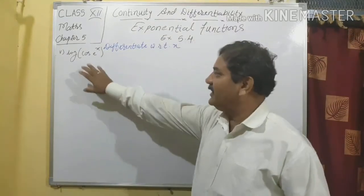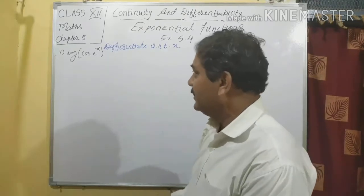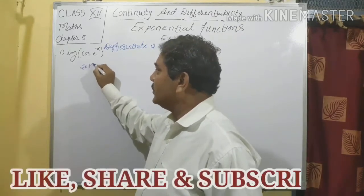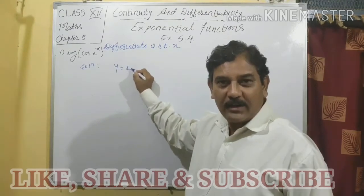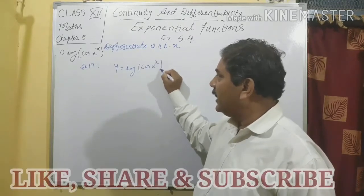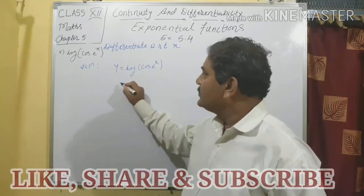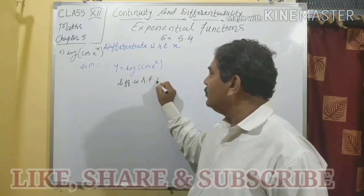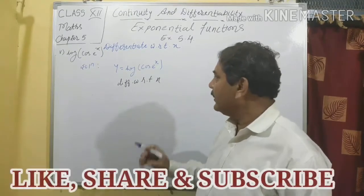Question number 5: differentiate y = log(cos(e^x)) with respect to x. Differentiating, dy/dx = d/dx [log(cos(e^x))].